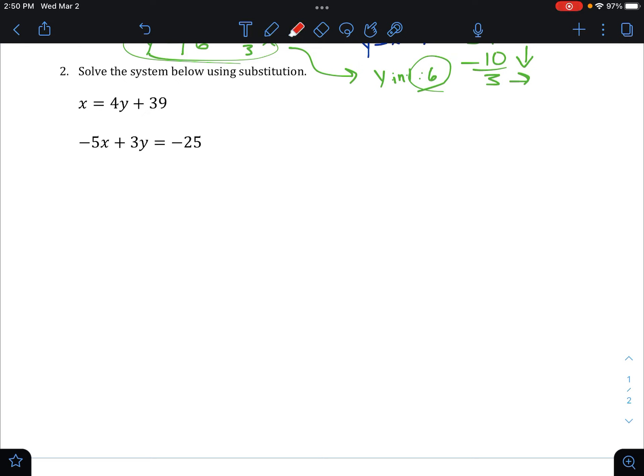So negative 5 times this would be negative 20y. And then we'll do negative 5 times 39, which is negative 195. And then bring down the rest of it. From there, we're going to just combine our like terms.